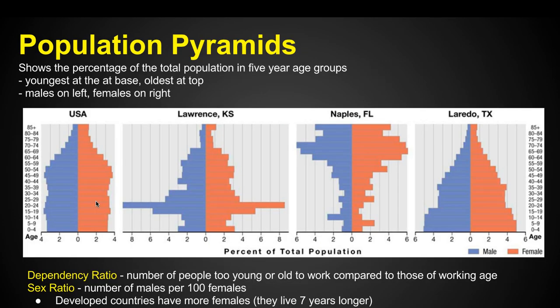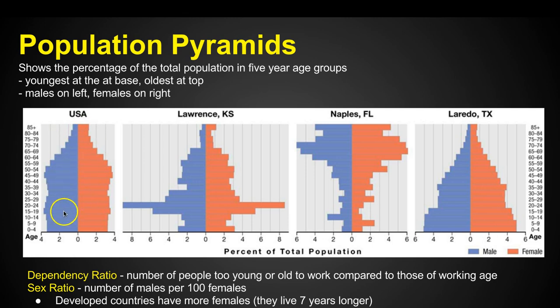Population pyramids — these are really cool. They show the percentage of total population in five-year age groups. We start with the youngest people at the bottom and the older generations at the top, with males on the left and females on the right. Ages go from zero to four all the way up to age 85 and beyond.